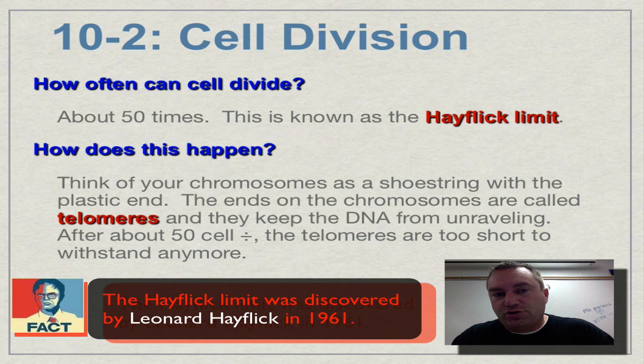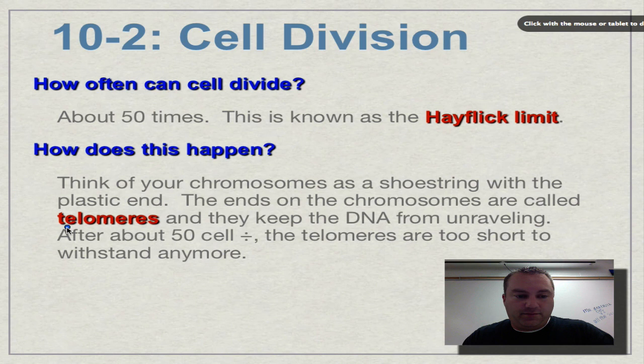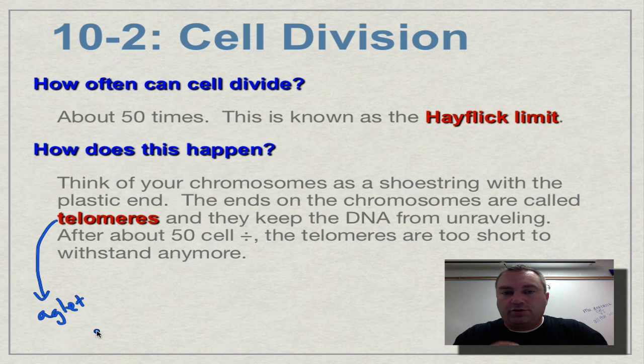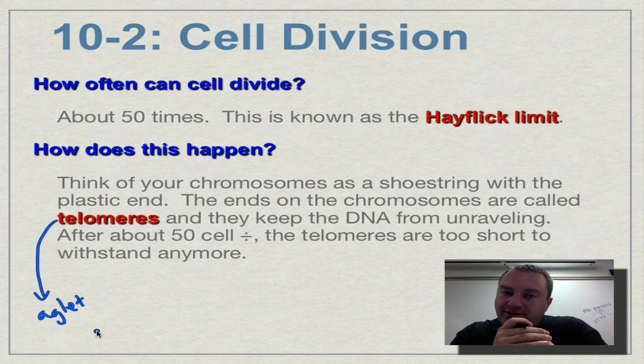Telomeres — you really want to think of them like the aglet on a shoelace. At the very tip of a chromosome you have these telomeres, and they get shorter and shorter every time the cell divides, until finally the telomere is so short that if you went through cell division one more time the whole thing would unravel. It's just like that aglet on your shoestring.